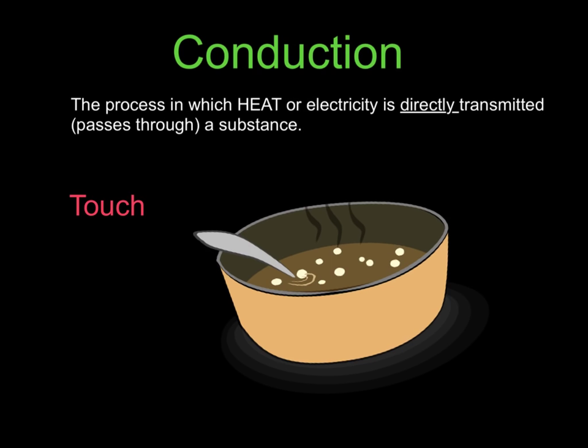Conduction is the process in which heat, or electricity, is directly transmitted. Transmitted means to pass through a substance. So pretty much here, heat is transferred by the method of actual touch, when two substances physically touch each other. So, make sure you write this down. You can pause the video to finish writing it down, and then continue playing the video when you're ready.